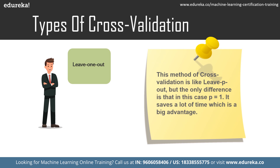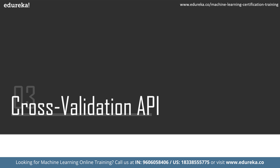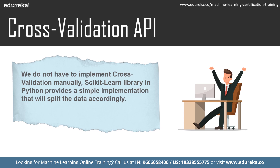Now let's look at the cross validation API. We do not have to implement cross validation manually — the scikit-learn library in Python provides a simple implementation that splits data accordingly. There are cross validation iterators used depending on various cross validation strategies. For example, for K-fold cross validation we have the KFold scikit-learn class; similarly, we have LeaveOneOut, LeavePOut, and StratifiedKFold classes. Let's use KFold in Python to create training and validation sets.